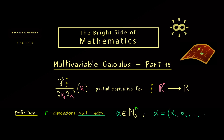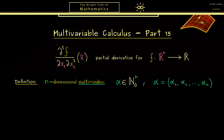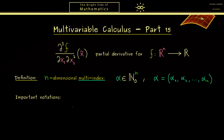The components we simply call α₁, α₂, and so on. This is important because we will use the components a lot. The first important notation you should learn is the absolute value, or length, of a multi-index. It's an easy definition: it's simply the sum of all components. This will be very helpful to describe the order of the partial derivative.